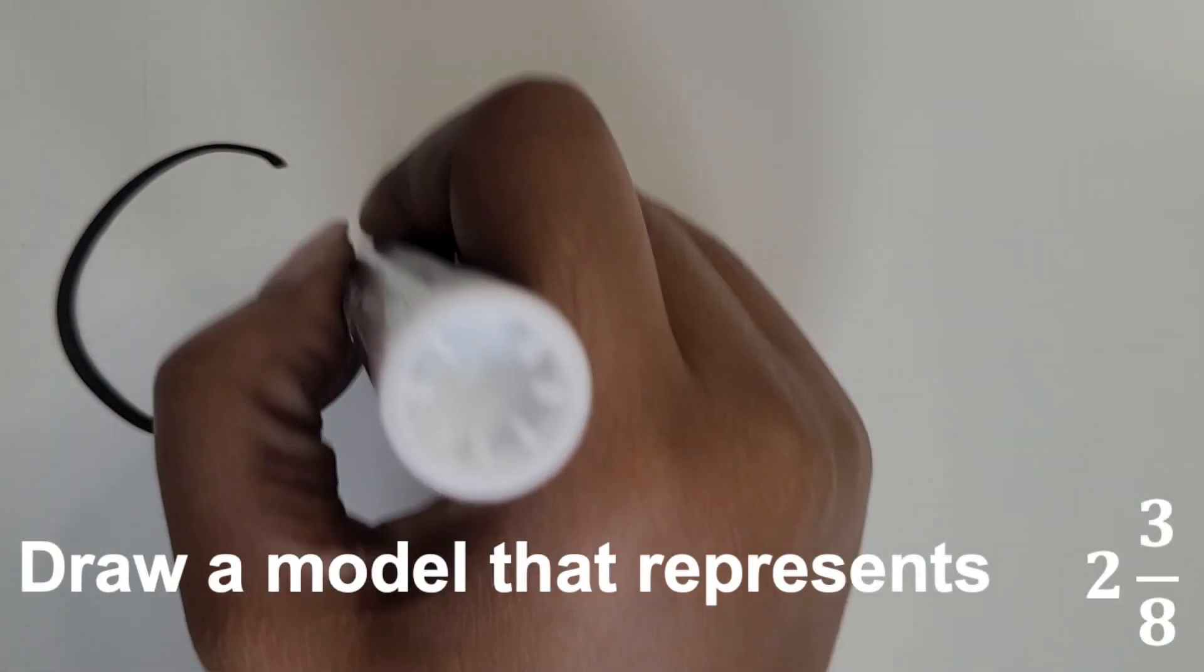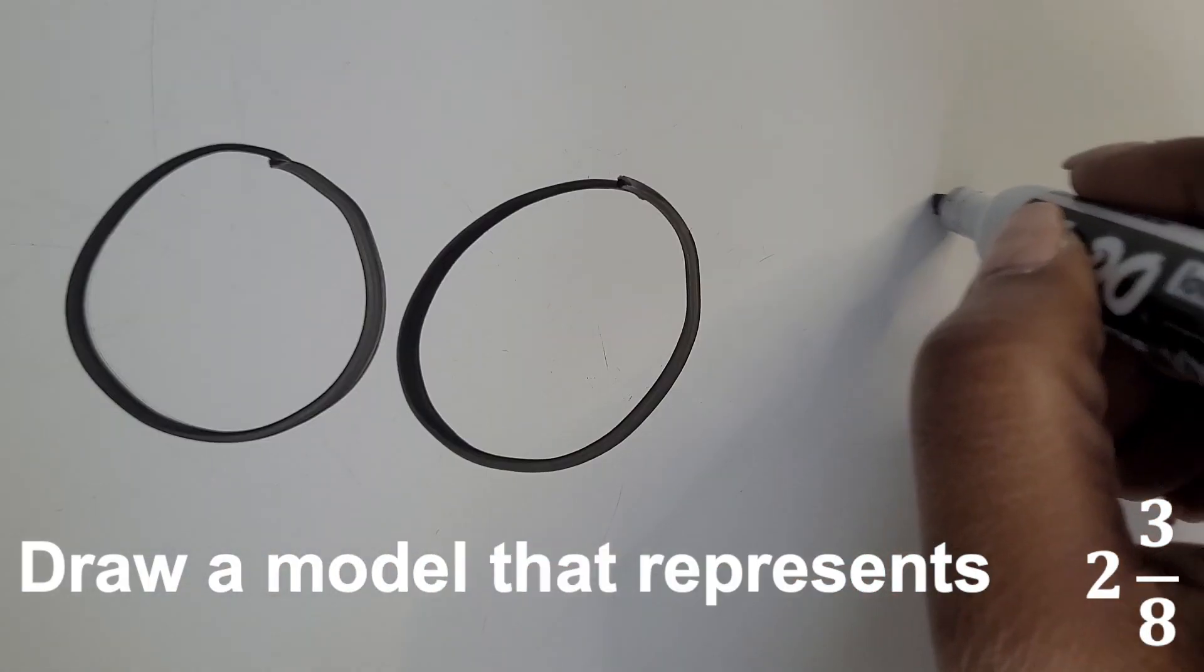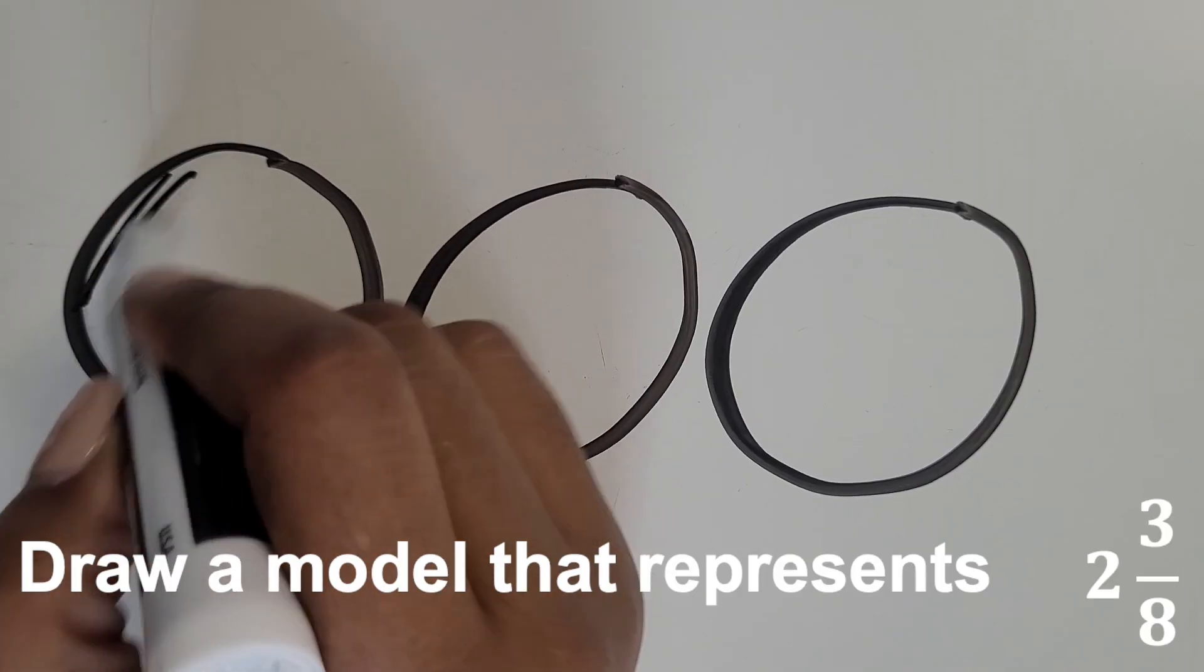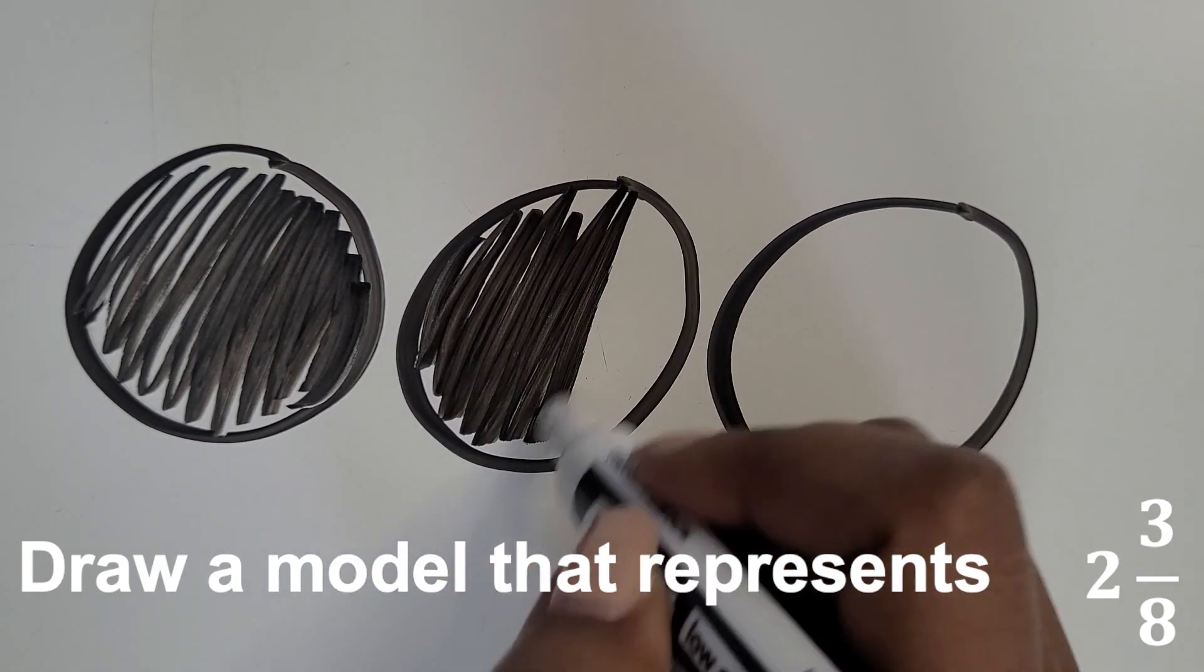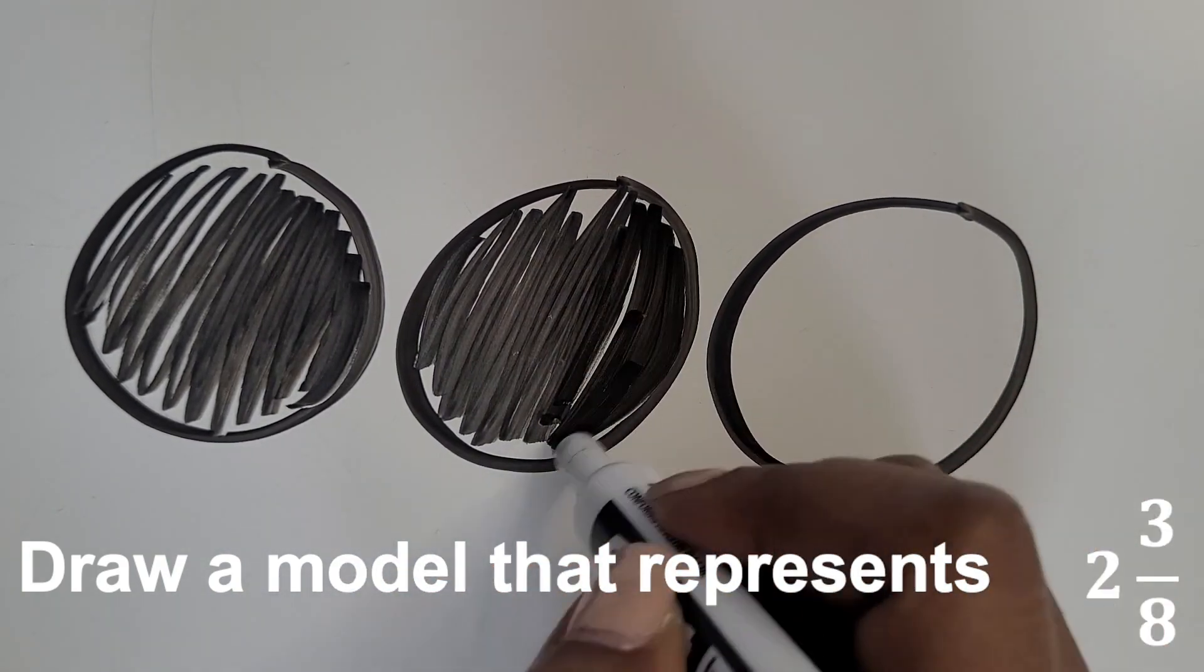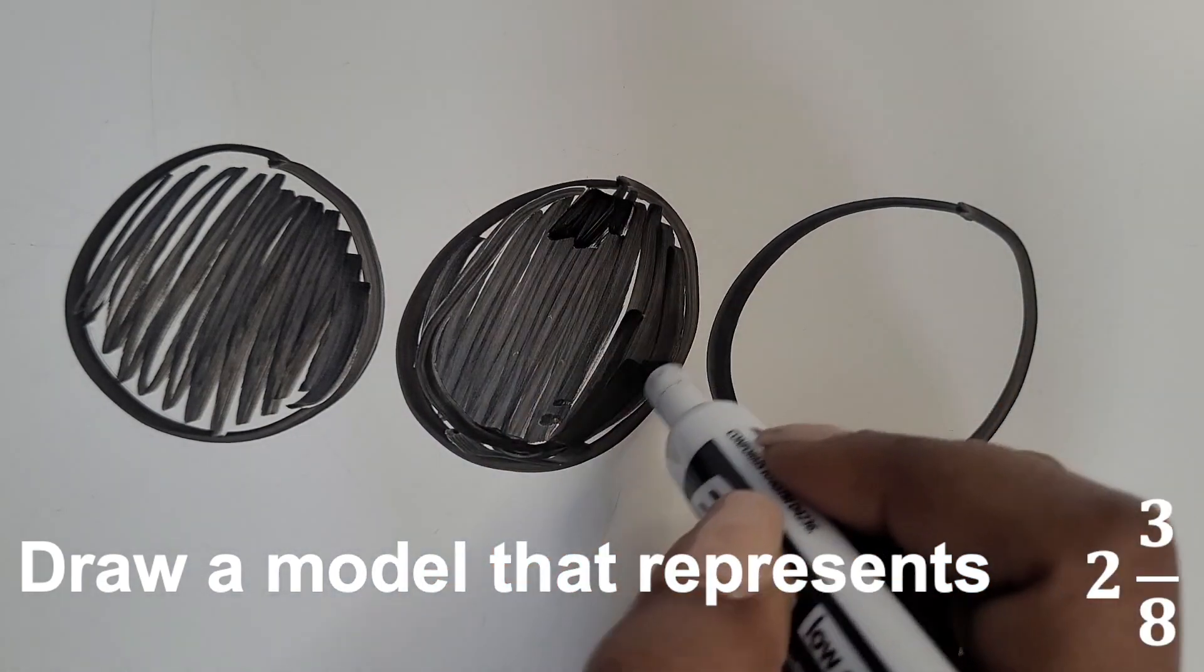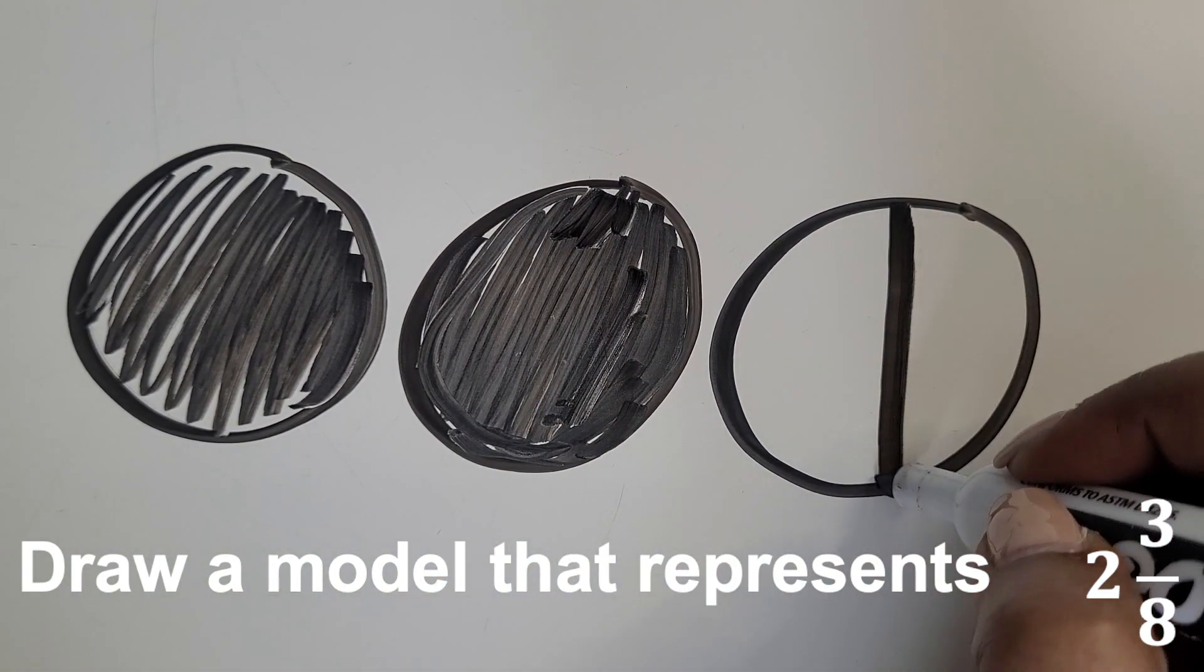Next let's represent two and three eighths. So we know we need three wholes. Two of them we're going to shade in the whole circle and then that third whole we're going to partition into eight equal parts because that's what the denominator shows. So a line vertically down the middle,